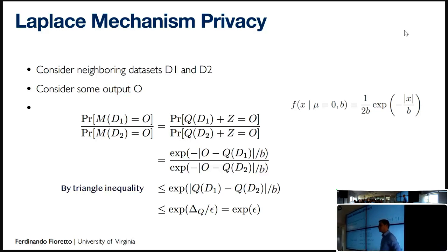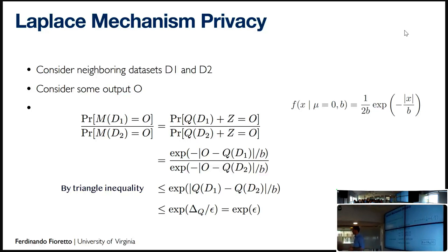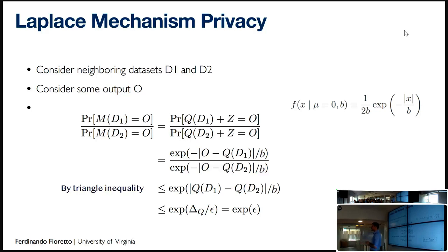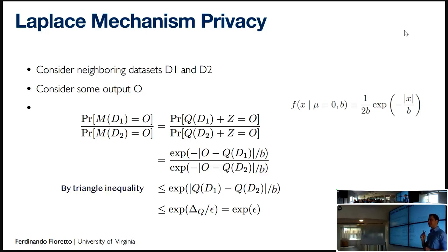A question was raised: so far we've only talked about including or excluding a single individual, but this doesn't only apply to individuals — it becomes more important for minority groups, and the dataset size probably matters. Yes, we're going to talk about that in part three — it's a very interesting question.